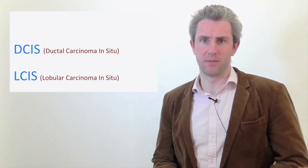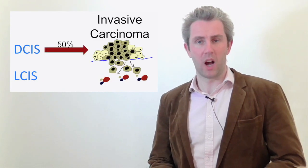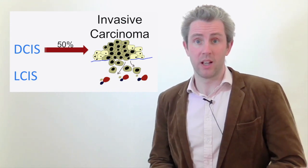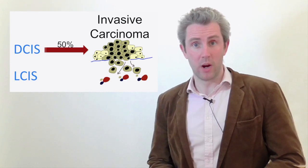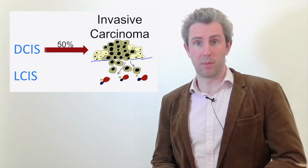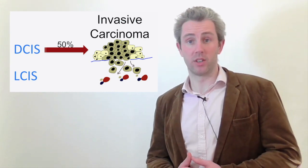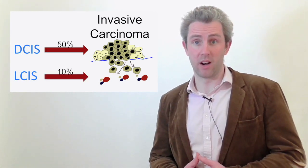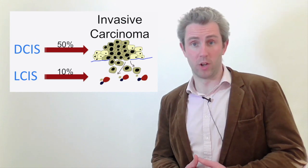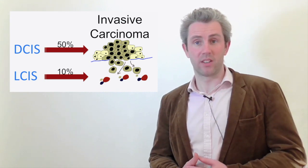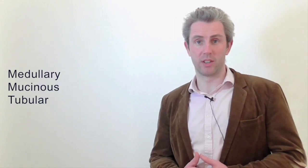Invasive ductal carcinoma develops in 50% of patients with untreated DCIS within about 10 years of diagnosis. Lobular carcinoma in situ develops from cells lining the lobules. It rarely presents as a lump and can be picked up on screening through biopsies performed in benign breast lesions. Invasive lobular carcinoma represents 10% of all breast cancers, and only 10% of patients with LCIS develop invasive lobular carcinoma. It is often multifocal and may be bilateral. Other types of invasive breast cancers are rare and include medullary, mucinous, and tubular carcinomas.